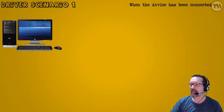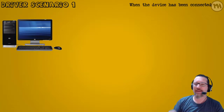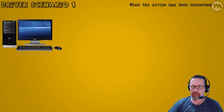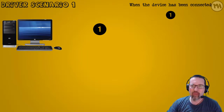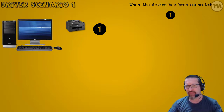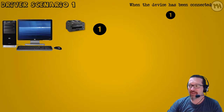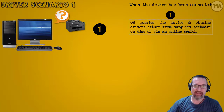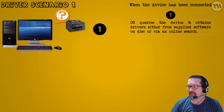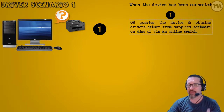Let me give you an example — let's have a look here. When you have a device that you've connected to your computer, let's say it is a printer as an example. When the device has been connected, the first thing that happens is the operating system queries the device and obtains drivers — either from supplied software on disk, or via an online search.